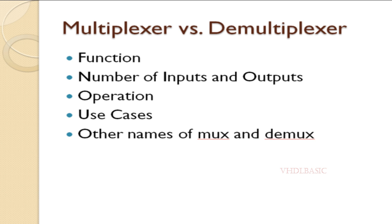Use cases: MUXes are commonly used in applications where you want to combine or multiplex several signals into one, such as in data transmission, memory addressing, or channel aggregation in communication systems. DEMUXes are used in applications where you want to distribute or demultiplex one signal to multiple destinations, such as in communication systems for routing data to different receivers or memory addressing in microprocessors.